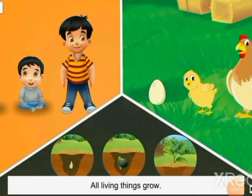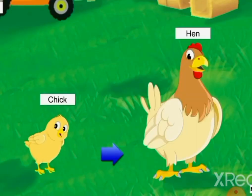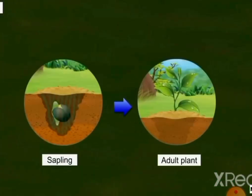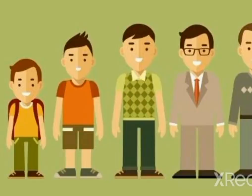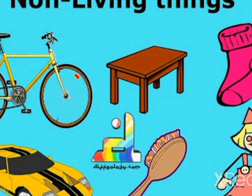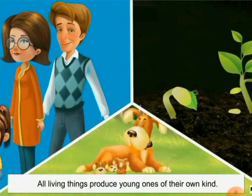All living things grow. A baby grows into an adult; a chick grows into a hen. They grow only in the early part of their lives. A sapling grows into a plant, and plants grow throughout their lifetime. Non-living things such as benches, bags, stones, and cycles do not grow.